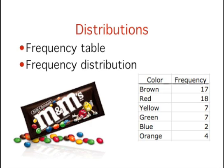I recently purchased a bag of plain M&Ms. The M&Ms were in six different colors. A quick count showed that there were 55 M&Ms: 17 brown, 18 red, 7 yellow, 7 green, 2 blue, and 4 orange. These counts are shown in the table.